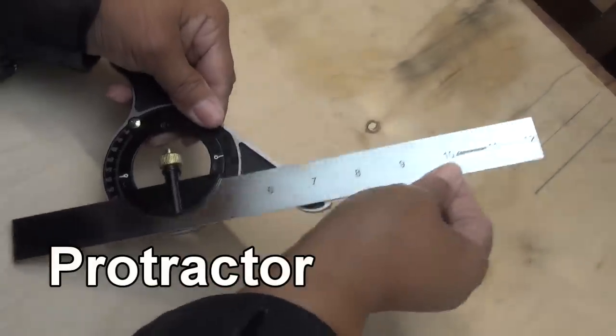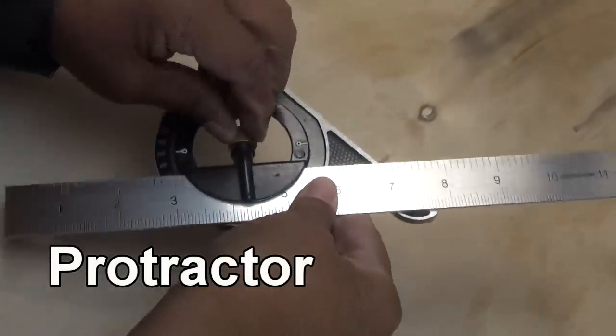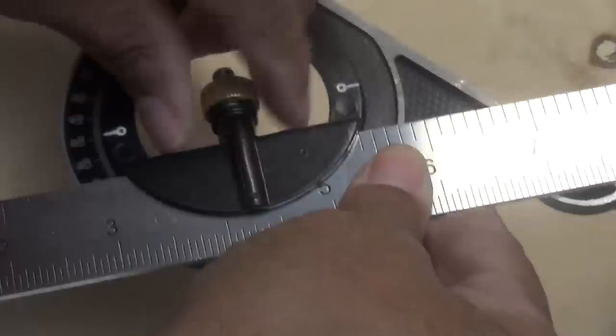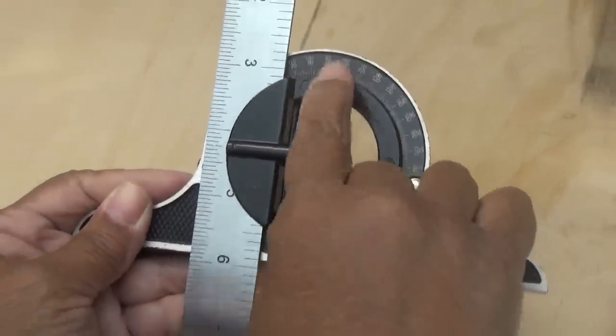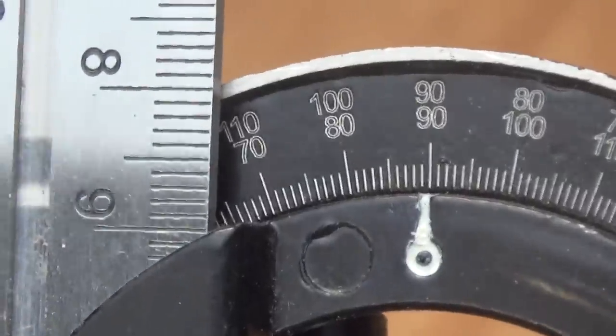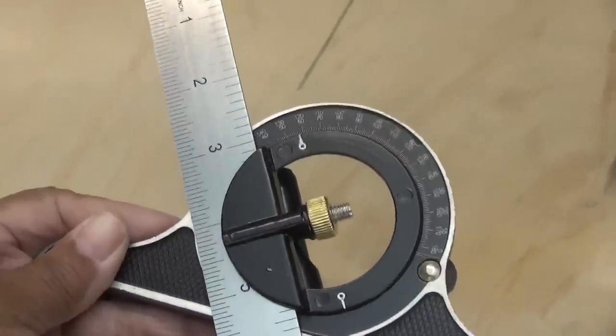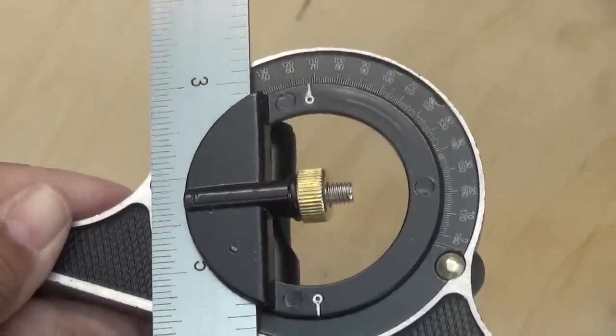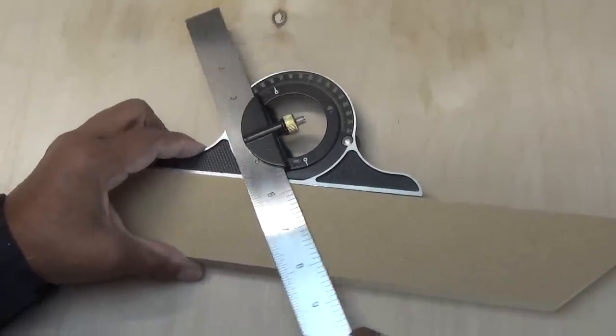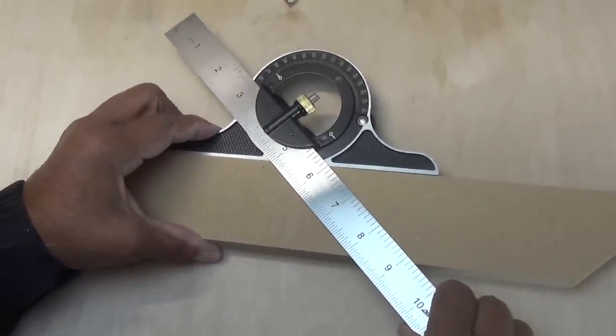Now next we have a protractor that slides on just like the center finder. Notice how I have this set at 90 degrees. Well I can pivot it to different locations on the protractor or I can set it for example to 45 degrees.